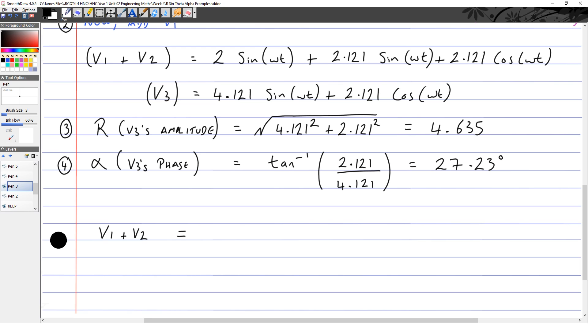So we can say V1 + V2, which is V3, is equal to R sin(ωt + α), which is 4.635 sin(ωt + 27.23°), which is very similar to what we did graphically, but this is more accurate.